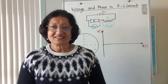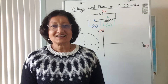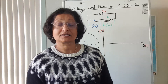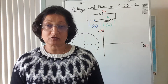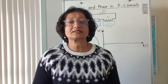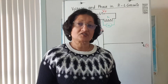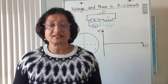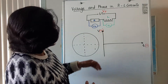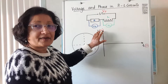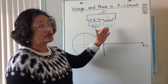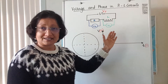Hi everybody. This lesson is about voltage and phase in an AC circuit where you have two components: a resistor and an inductor. Just like we had for the resistor-capacitor circuit, this is a resistor-inductor circuit, and as expected, the voltage across the resistor is actually out of phase with the voltage across the inductor.